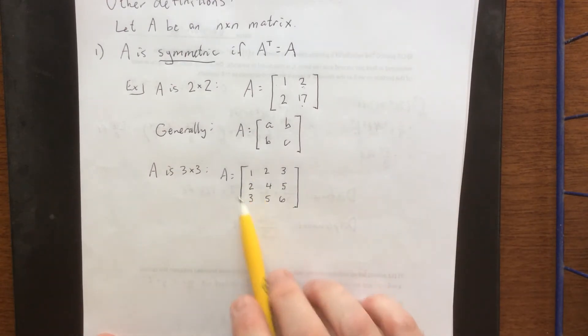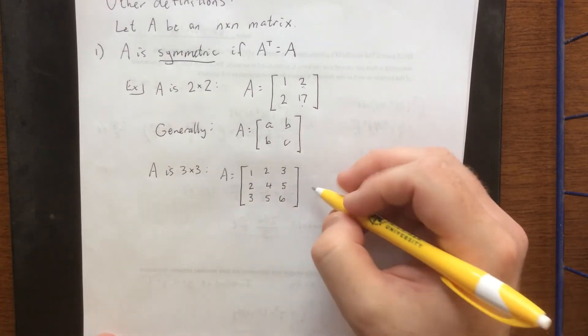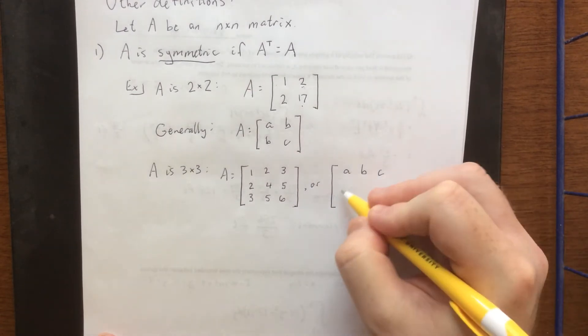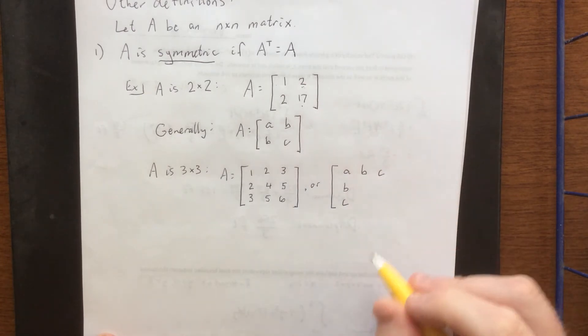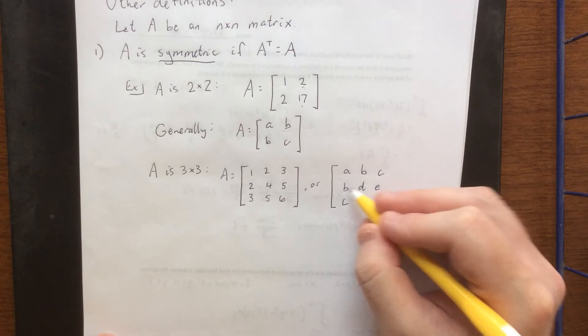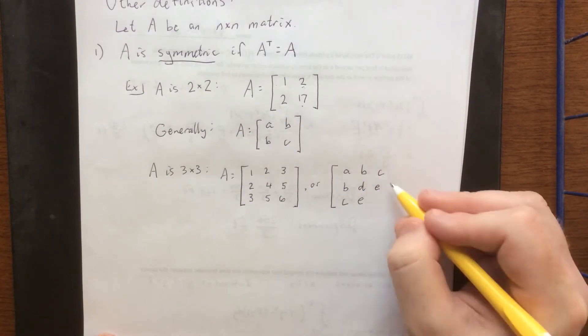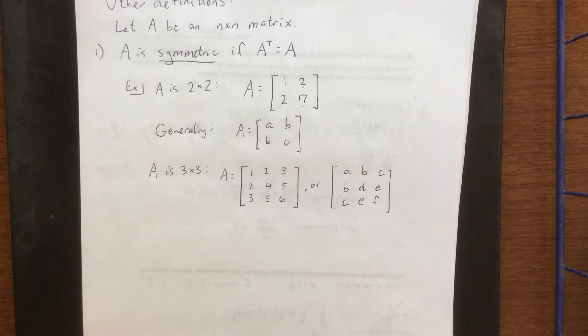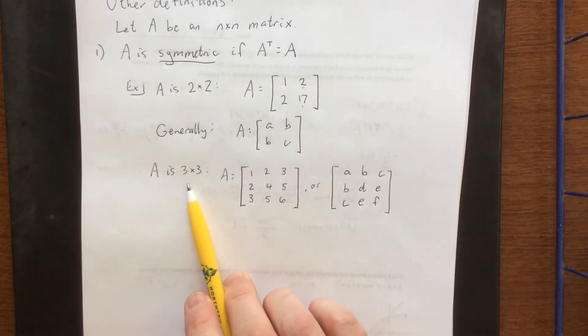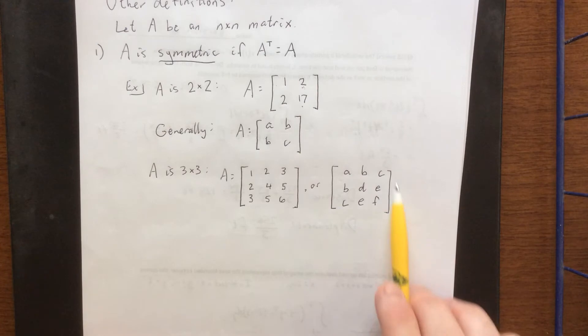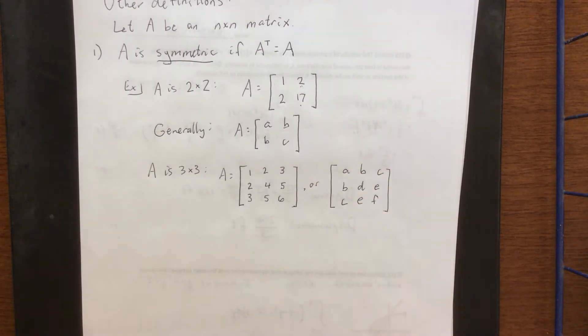So there are really six distinct entries when we think about it. If the first row is A, B, C, first column has to be A, B, C. If the second row is B, D, E, the second column has to be B, D, E as well, and for the 3, 3 entry that can be anything. So for a 3 by 3 matrix we would say that the subspace of symmetric matrices would have dimension 6 because there are six different values that you would see in here.